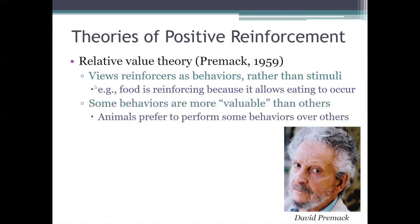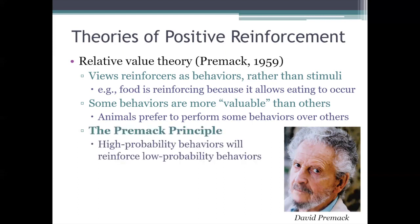Some behaviors are more valuable to an individual than others, which is why Premack's theory is known as relative value theory. Given a choice between two different behaviors, animals are likely to prefer one — relatively speaking, one of those behaviors is going to be of greater value to the animal. The basic idea is that behaviors differ in their relative value, and more valuable behaviors will reinforce less valuable behaviors. More probable behaviors — those the animal naturally performs more frequently — can reinforce less probable behaviors. That's the core idea, and it's known as the Premack principle.